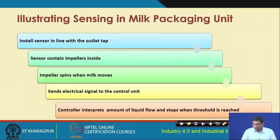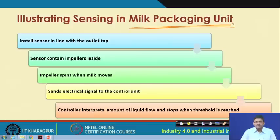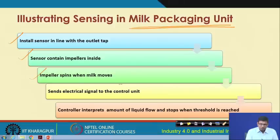Let us consider the example of a smart milk packaging unit. In a milk packaging unit, you need to install sensors in line with the outlet tab, and there would be some impellers attached to the sensors. These impellers would spin when the milk moves. An impeller is something very circular with grooves and blades on its surface, so when a fluid such as milk flows it is going to rotate accordingly. The impeller spins when the milk moves and since the electrical signal to the control unit is reached, the controller would interpret the amount of fluid flow and stop when the threshold is reached.